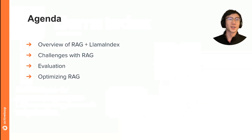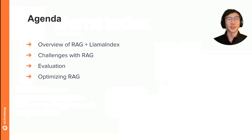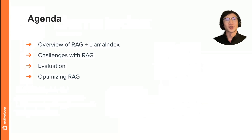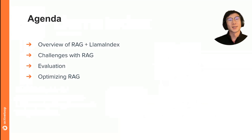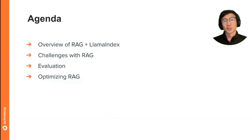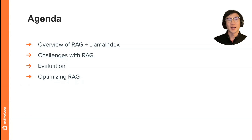A quick overview of the agenda today: we'll first give an overview of what retrieval augmented generation, or RAG, is, plus Llama Index. Then we'll talk about the challenges with RAG — what are the failure modes? We'll talk a little bit about how to actually evaluate the performance of your RAG pipeline, and then we'll spend a good chunk of this talk talking about how to optimize your RAG pipeline.